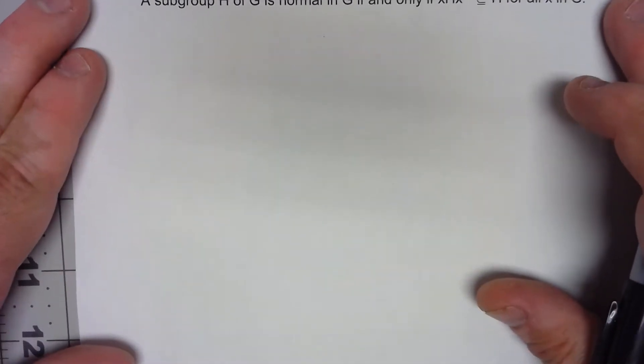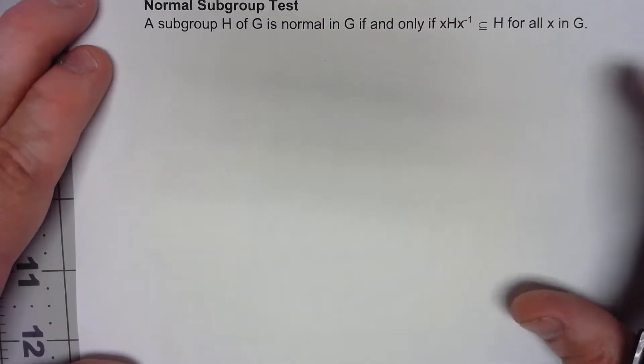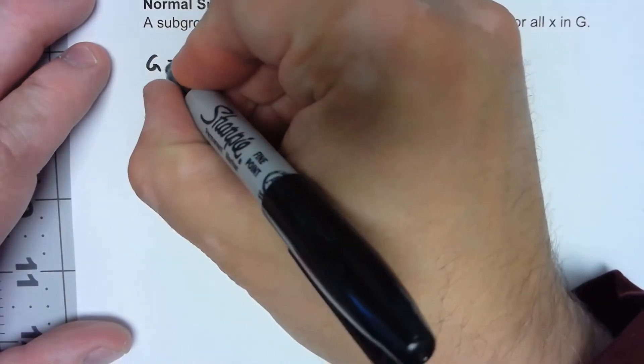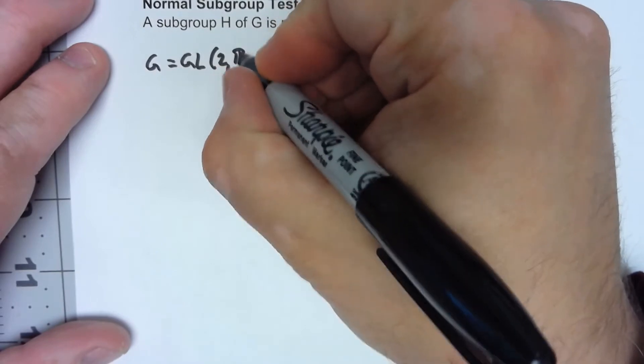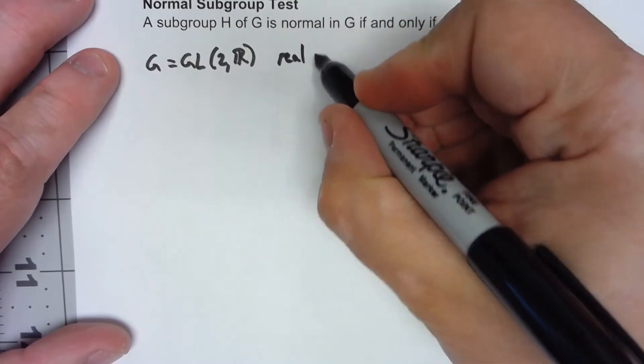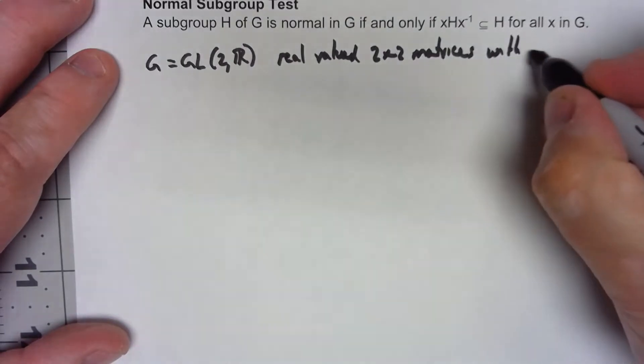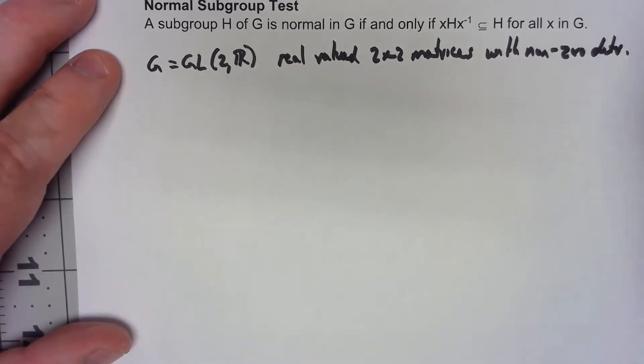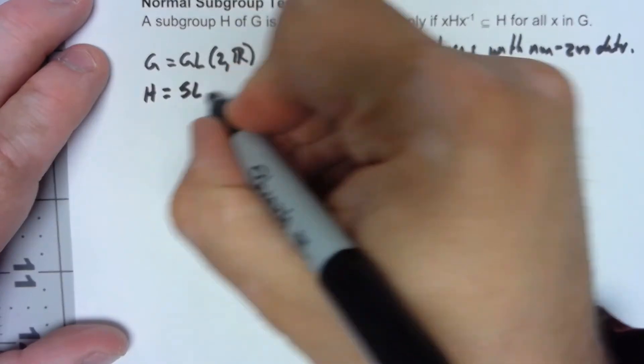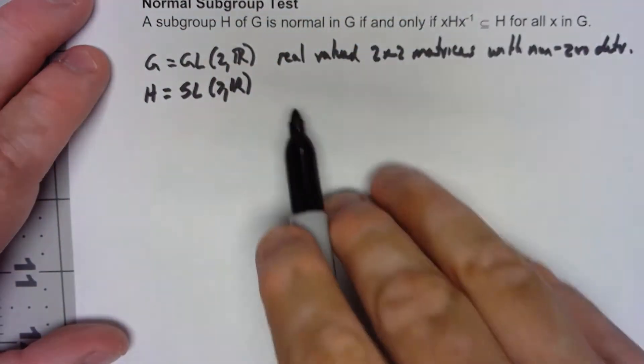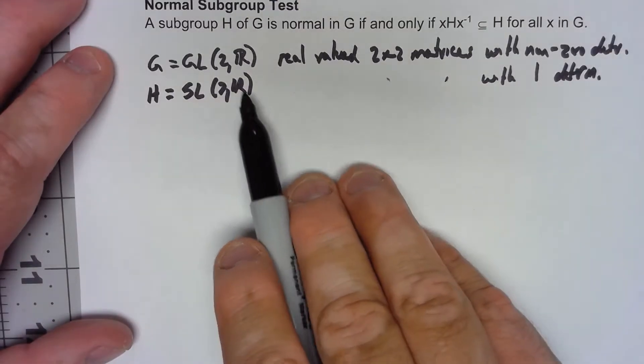So let's take a look at a couple of groups that we haven't really considered too much recently. Let's say we have the group G is GL(2,R), and that was real valued 2 by 2 matrices with nonzero determinant and the operation being matrix multiplication. Then I'm going to take as my subgroup SL(2,R), which was again real valued 2 by 2 matrices, but these specifically had a determinant of 1.